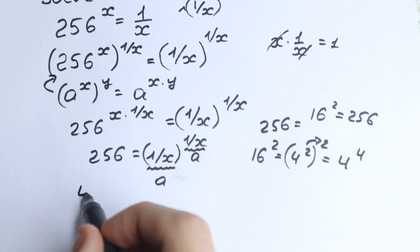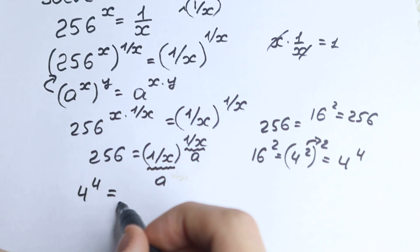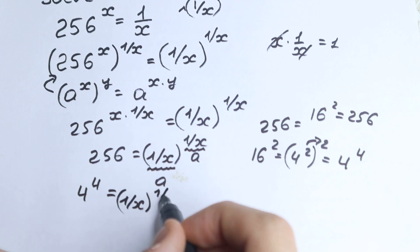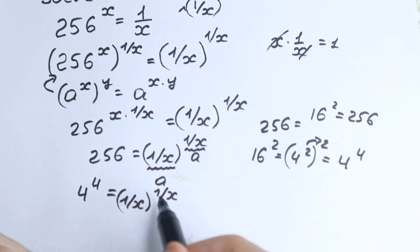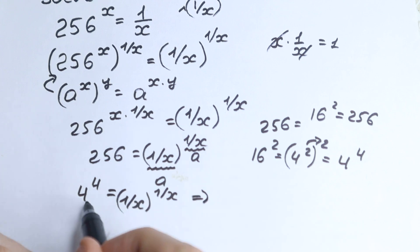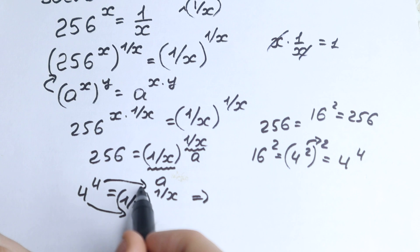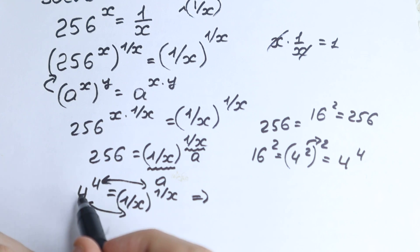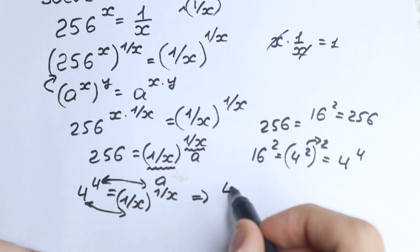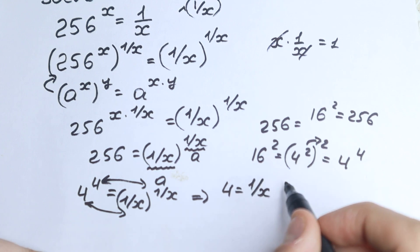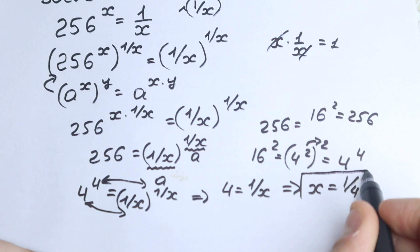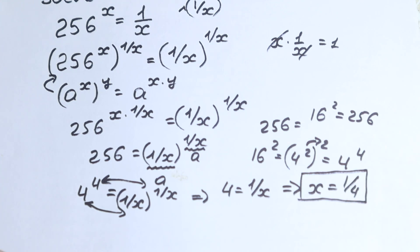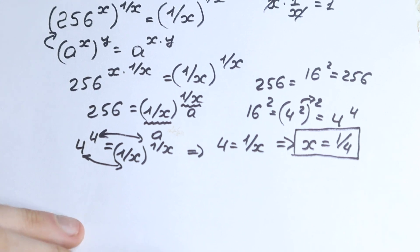So we have 4 to the power 4 equal to 1 over x to the power 1 over x. We have the same base and same exponent on the left, and the same base and same exponent on the right. So we can say that the base equals the base: 4 equals 1 over x. Therefore x equals 1 over 4. This is our answer, though I know this is a tricky approach, so let's verify it.